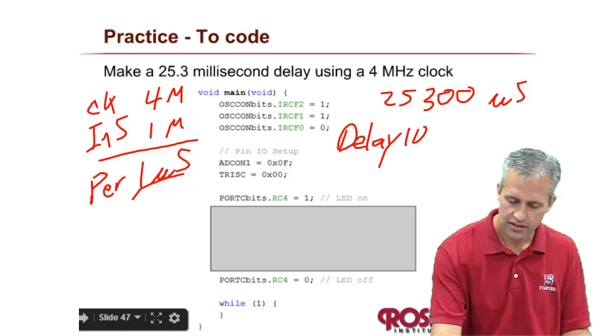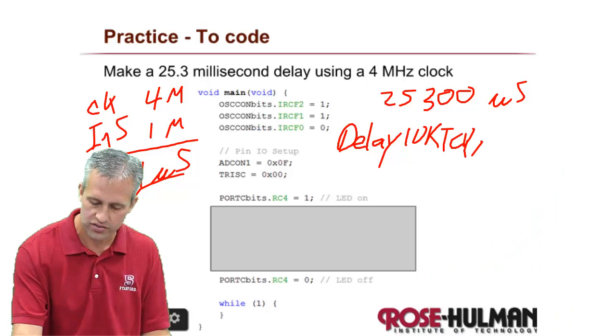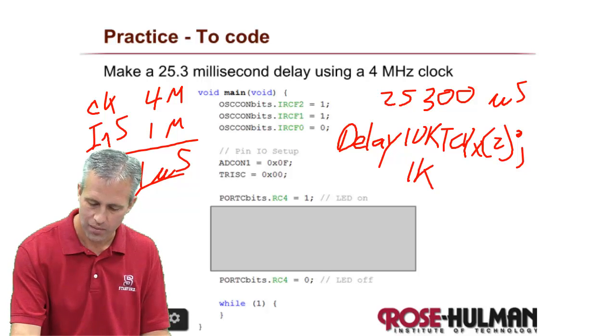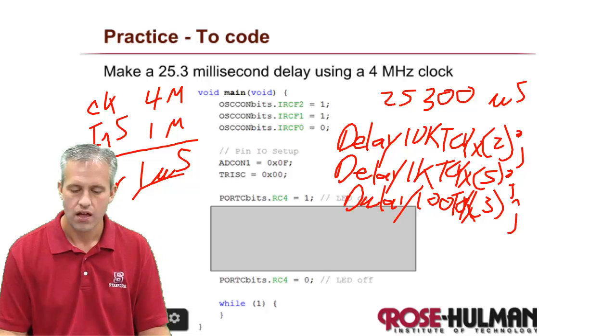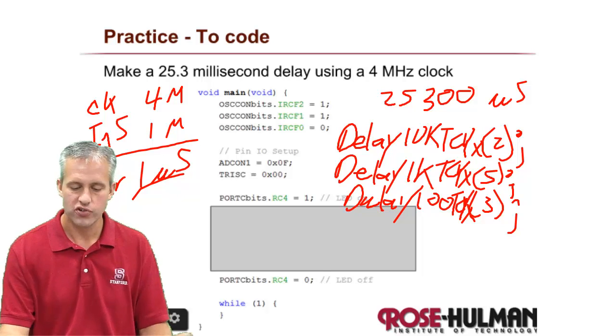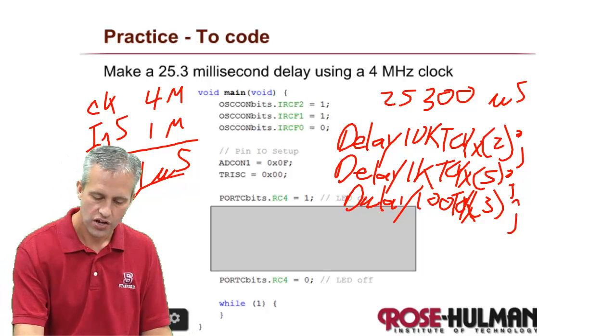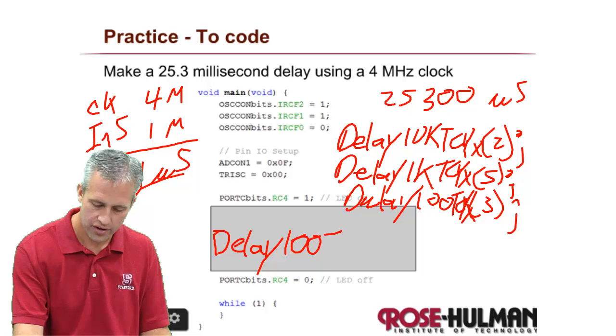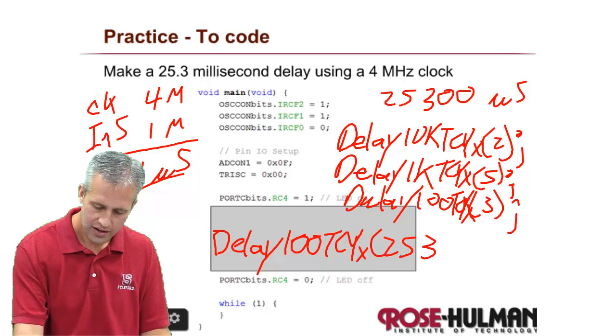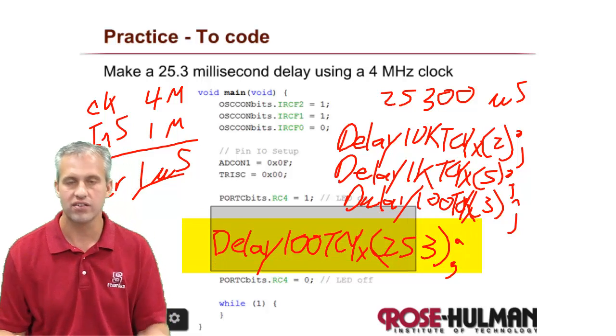You could do it in three steps. So you could say delay 10k, tcy, x, 2. And then 1k, 5. And then 103. So assume that I have the word delay in here. And that would totally work. So you wrote it down in three steps. But you actually could, since it's 253, you could do it in a single statement. So delay, if we did it times 100, tcy, x, 253, turns out my number was not that arbitrary. I actually could solve this whole thing in a single statement. And the reason I can get away with it is because 253 is totally within that range, right?